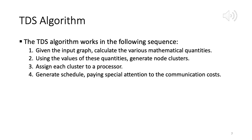On slide 7, the TDS algorithm steps in detail: given the input graph, calculate the mathematical quantities. Using those quantities, generate clusters — a node is another name for a task or sub-task. Assign each cluster to a CPU, then generate the schedule paying special attention to communication costs. These steps define the algorithm's operation.